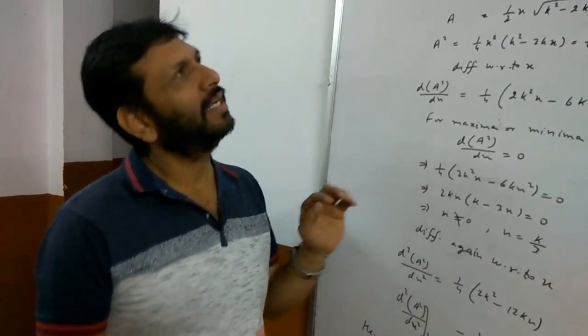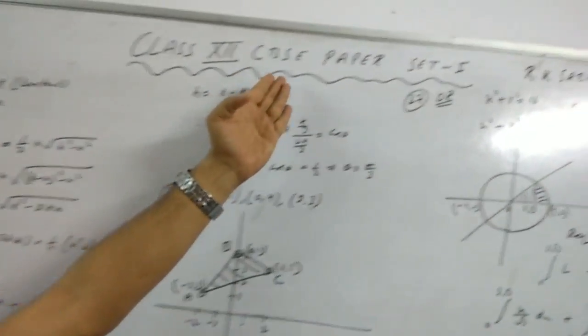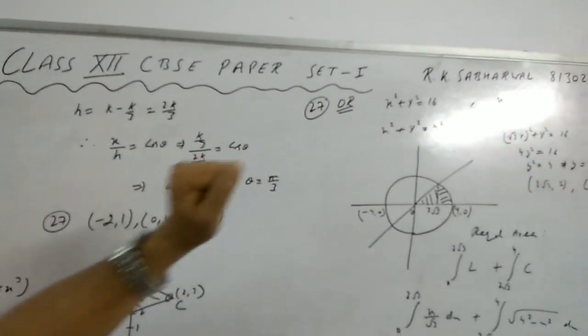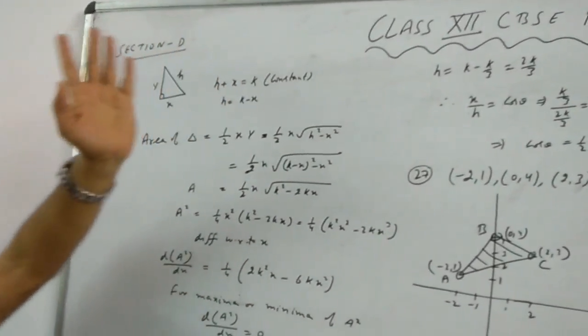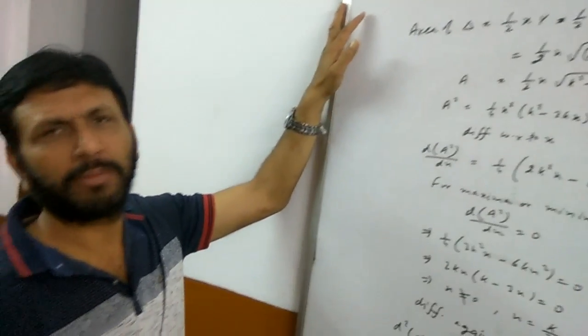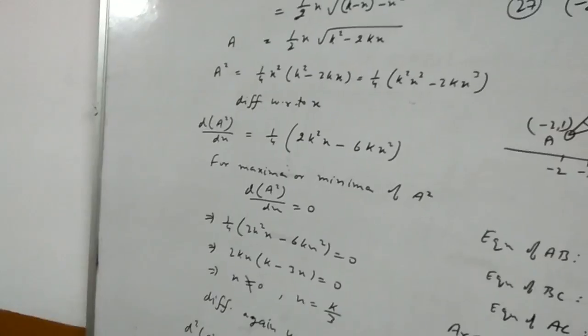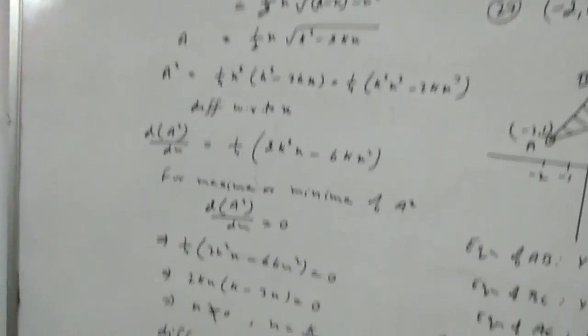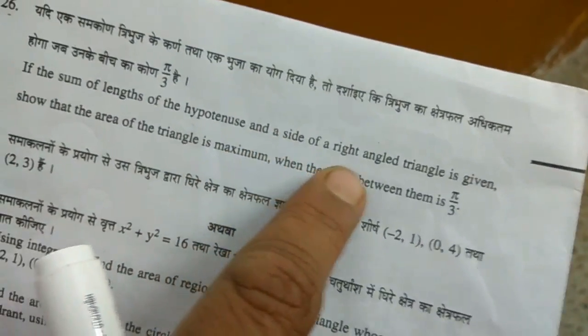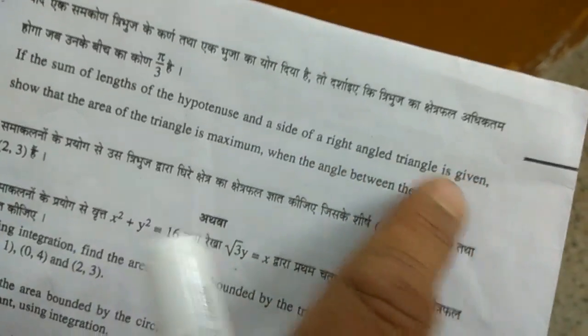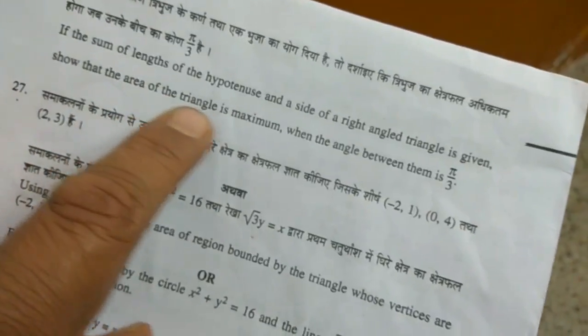Hello students, Class 12 CBSE paper set 1, Section D. Question number 25 is done, now let's do question number 26. If the sum of the length of hypotenuse and the side of a right angle triangle is given, show that the area of triangle is maximum when the angle between them is π by 3.